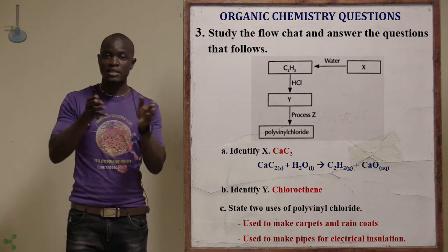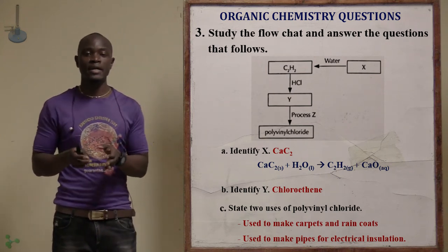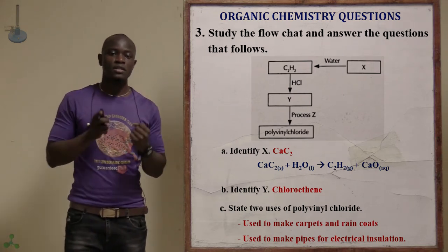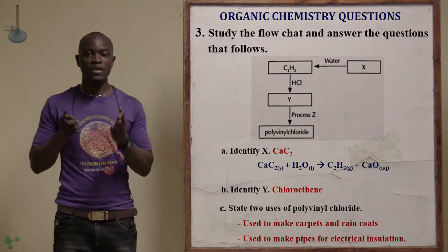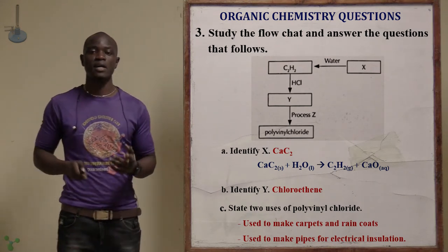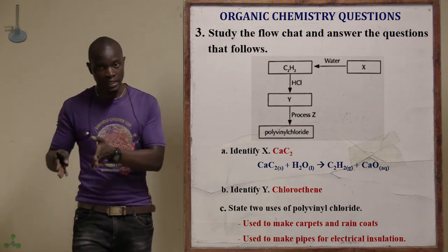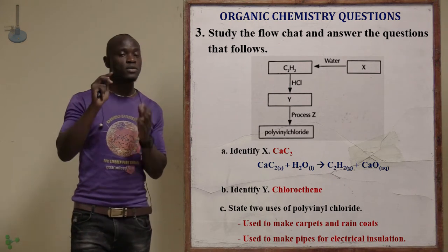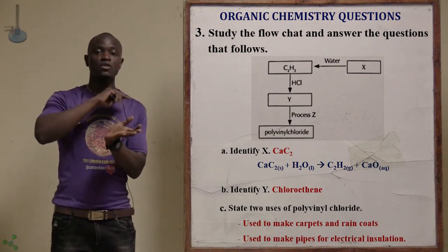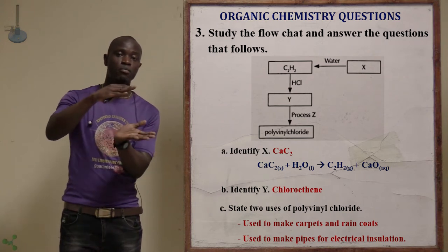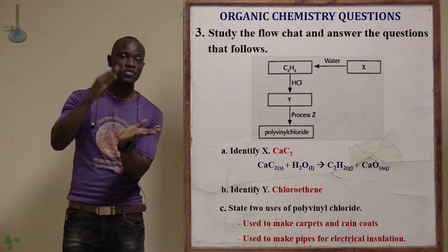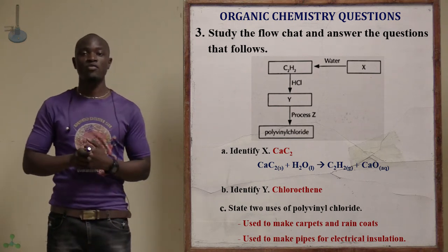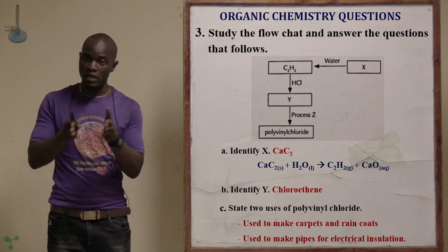We are reacting the ethyne with hydrogen halide. Substance Y automatically becomes chloroethene. Remember, the triple bond is going to break in phases — it will break and then you are going to have an ethene. After the reaction, we are going to have chloroethene: one hydrogen and one chlorine.